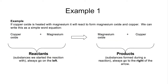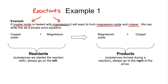Let's have a look at an example of how we actually identify and write these out. If we have copper oxide being heated with magnesium, it's going to react to form magnesium oxide and copper. The first thing we have to figure out is what the reactants are — the reactants are the things that we start with. So copper oxide and magnesium are our reactants. When we heat these two things together we are going to form magnesium oxide and copper, so these are called products.